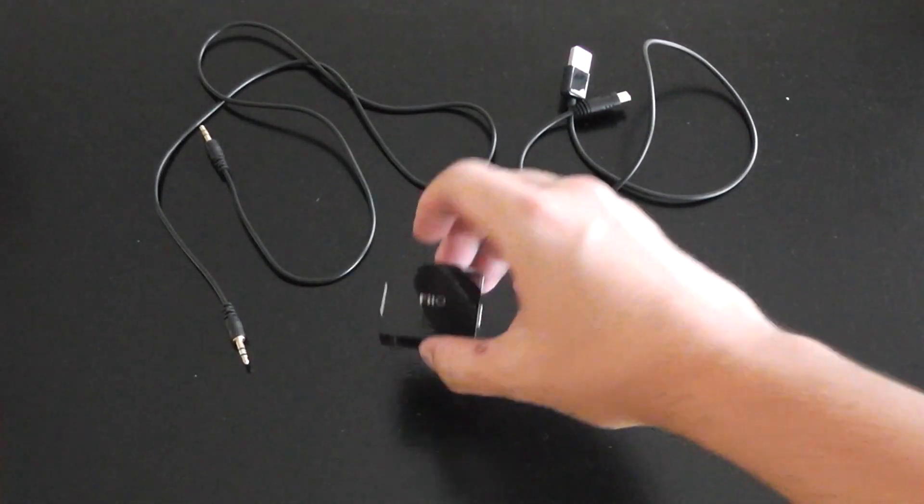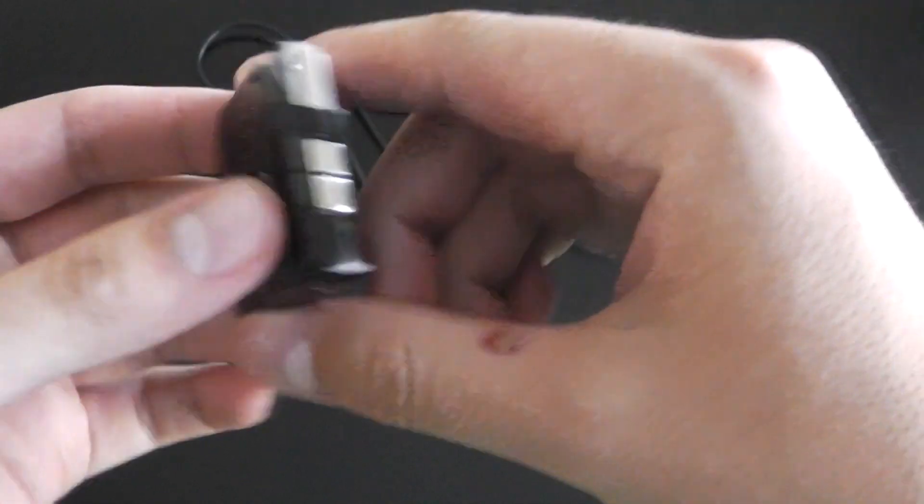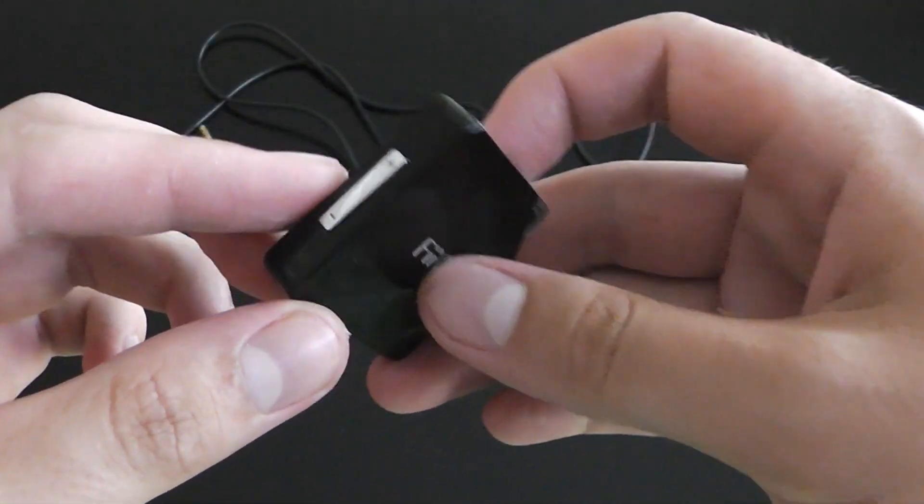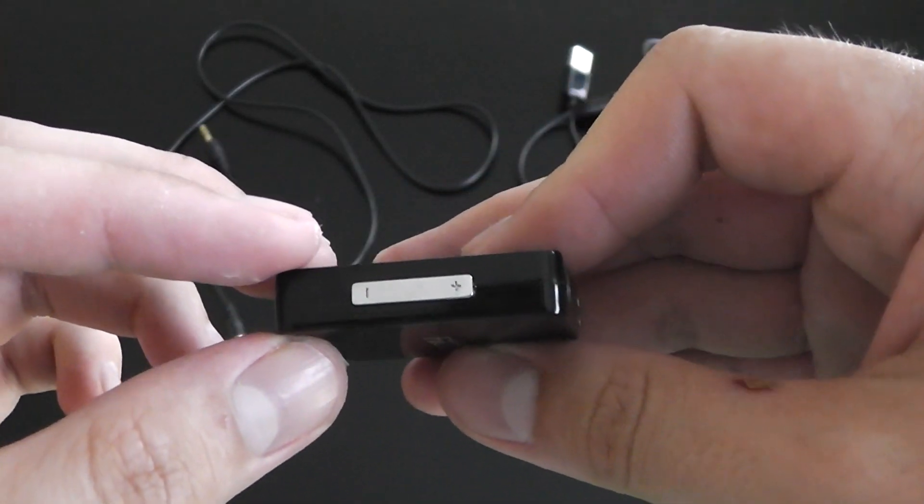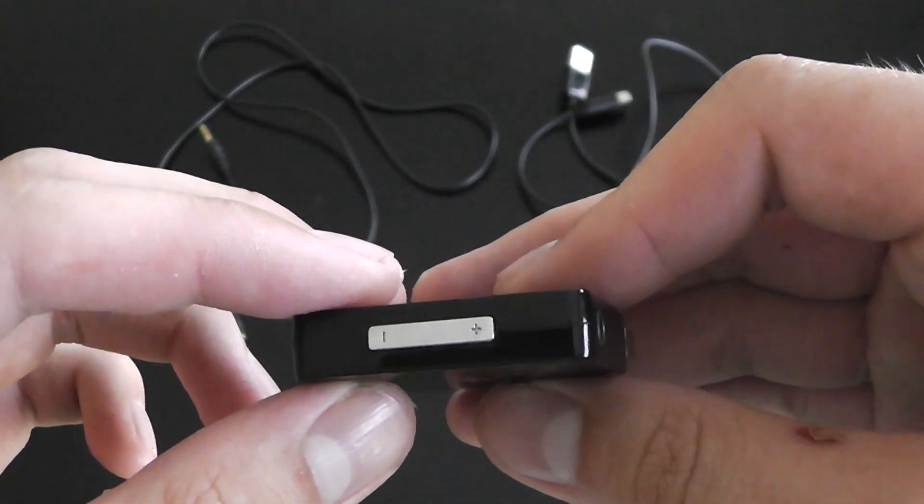This little thing right here is the FiiO Amplifier that says E6 on the back. It's very simple to use. Basically, it's a little device that makes your headphones sound better, like any headphones you have, and it makes them louder as well.